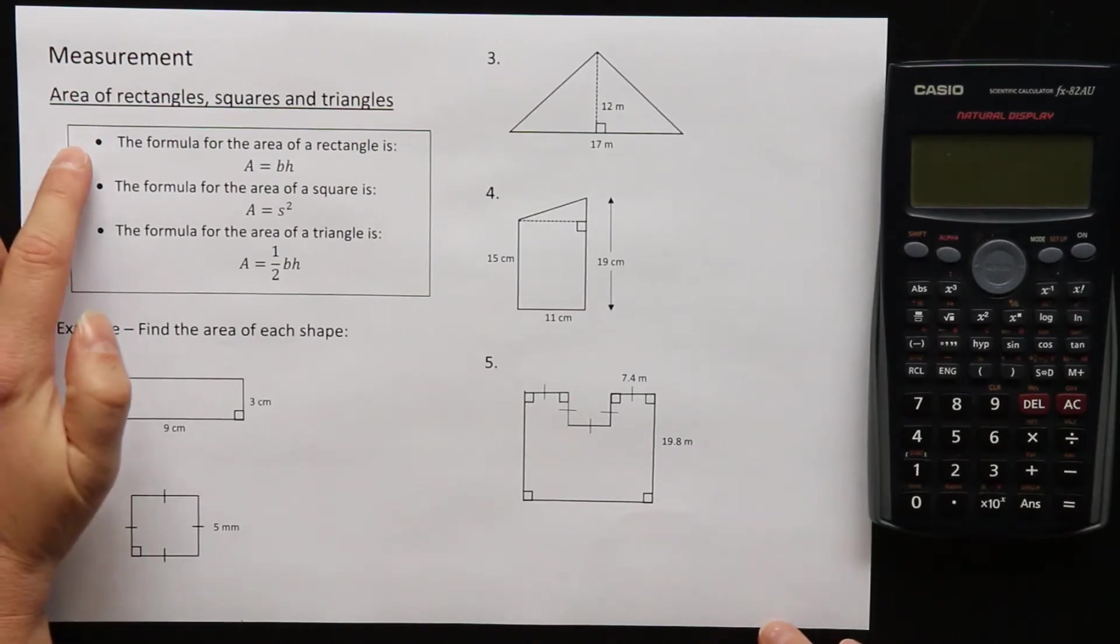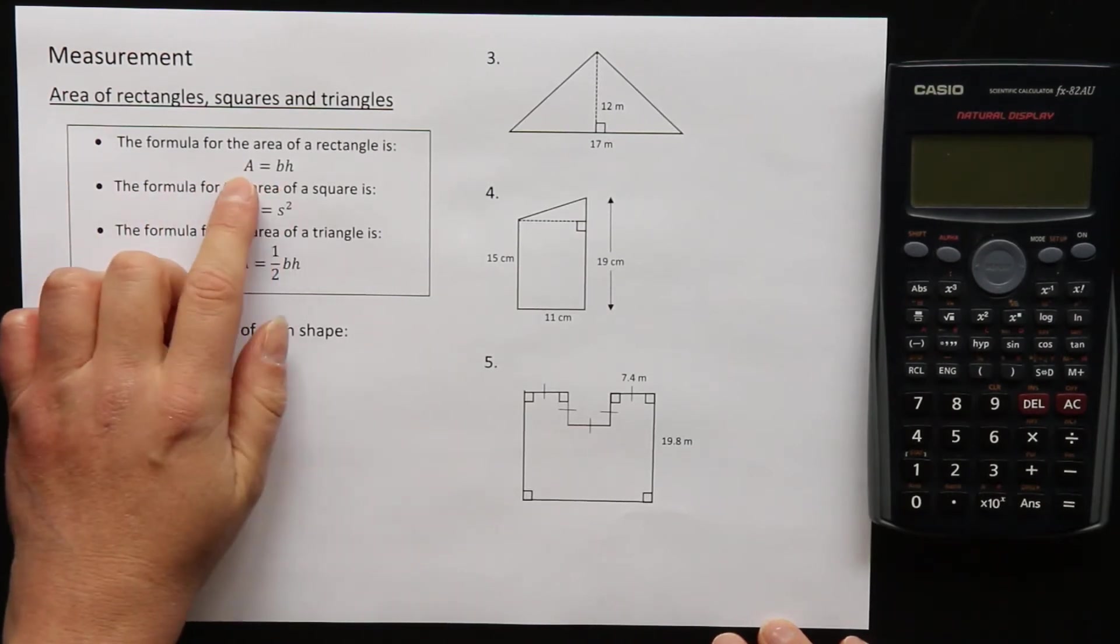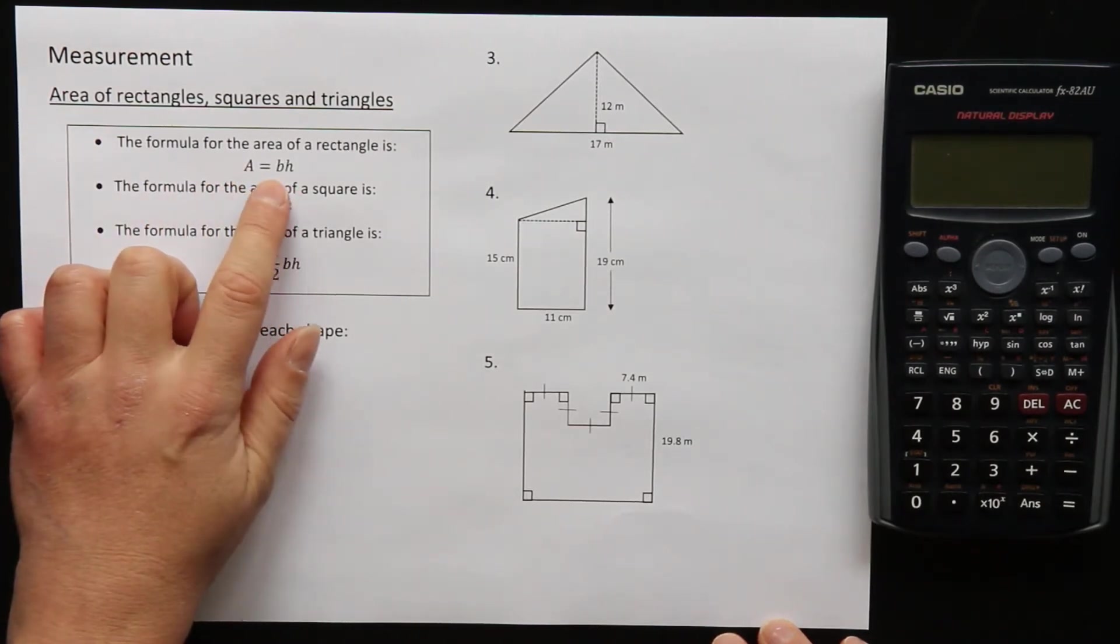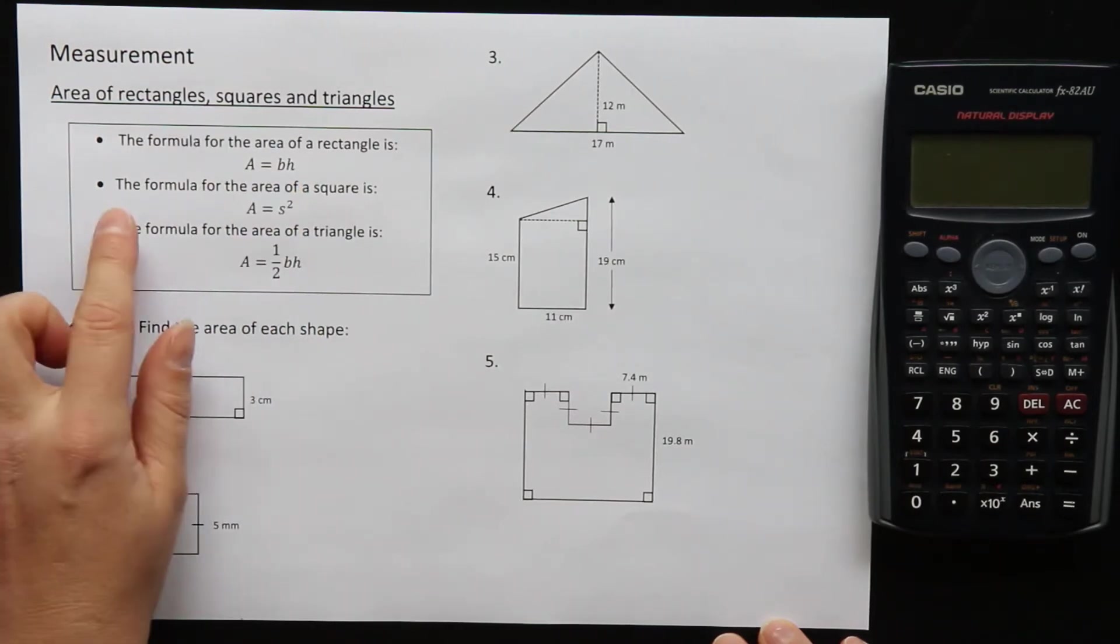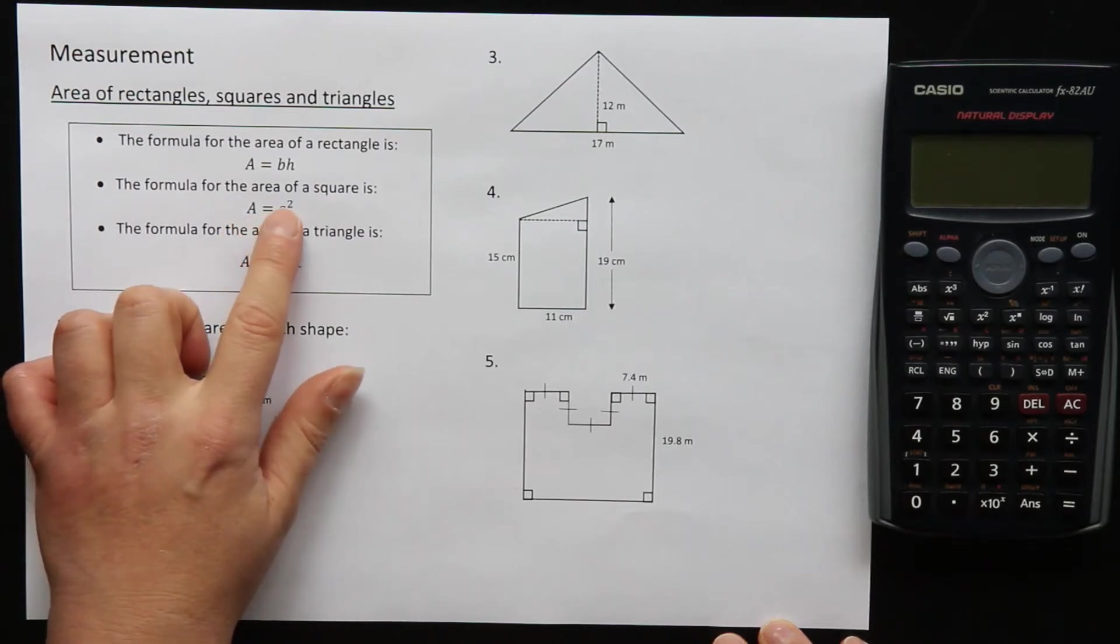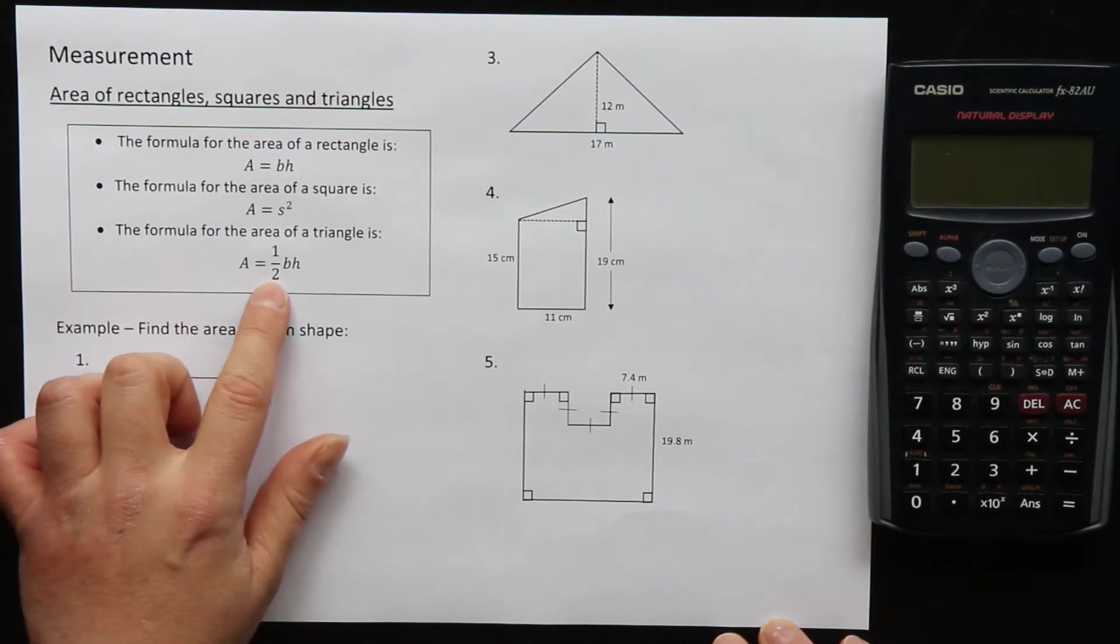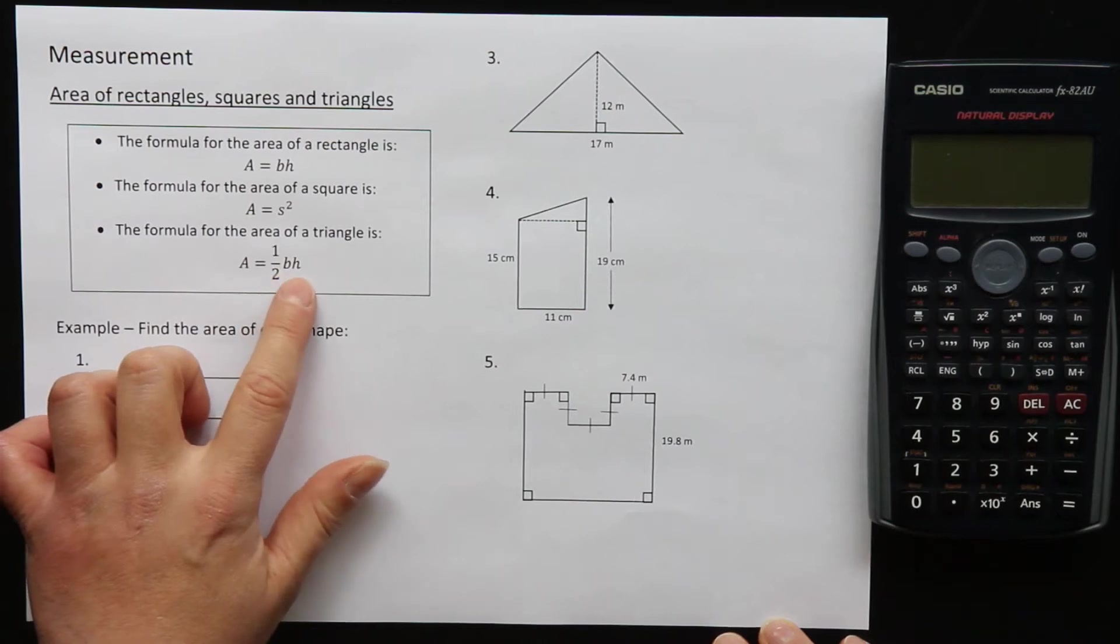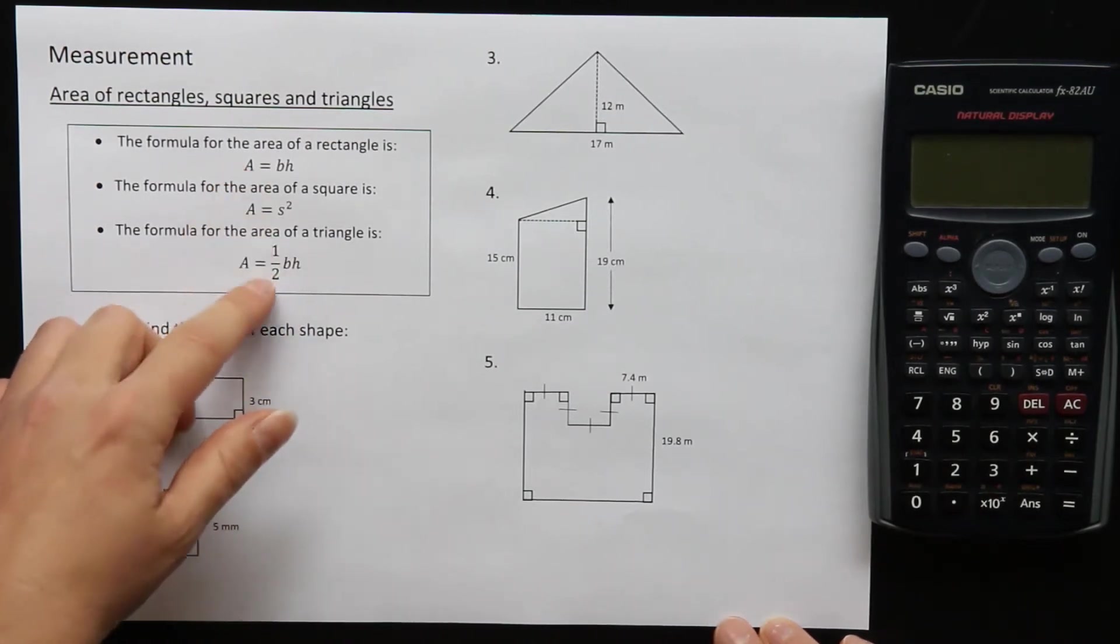I've listed all the formulas here for you. The formula for the area of a rectangle is A equals BH. B is for base, H is for height. The formula for the area of a square is A equals S squared, where S is the side length. And the formula for the area of a triangle is area equals half BH or half the base times the height, because a triangle is exactly half of a rectangle with the same dimensions.